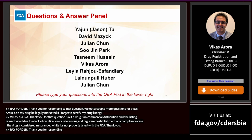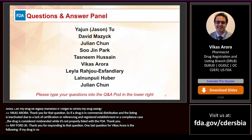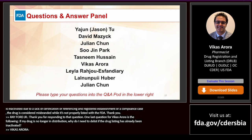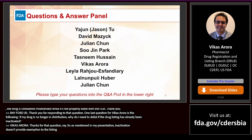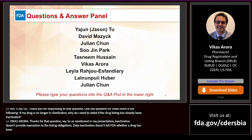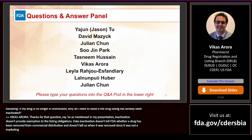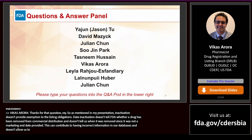Question: If my drug is no longer in distribution, why do I need to delist if the drug listing has already been inactivated? Inactivation doesn't provide exemption from listing obligations. Data inactivation doesn't tell FDA whether a drug has been removed from commercial distribution or when it was removed, since there was no marketing end date provided. This contributes to having incorrect information in our databases and doesn't allow us to accurately determine what is in the supply chain.